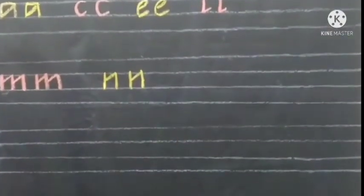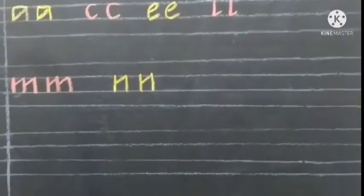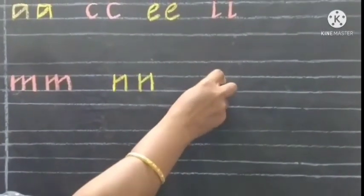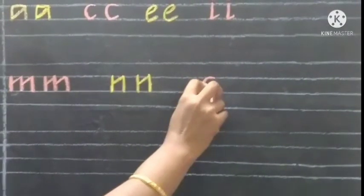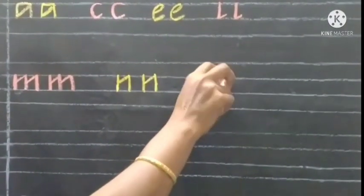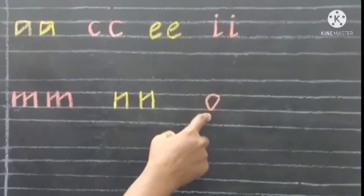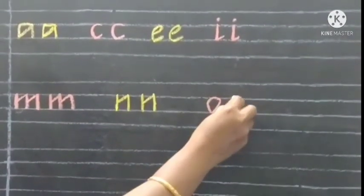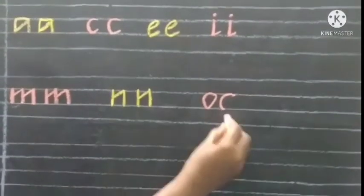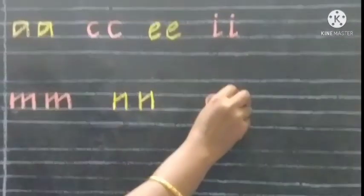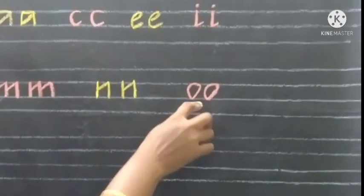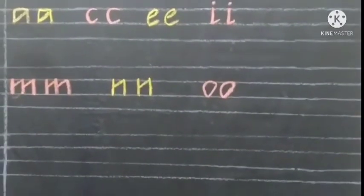It's time to write O. Draw a small curve and join with a slanting line — that's O. Write once again: a small curve and join with a slanting line. This is O.